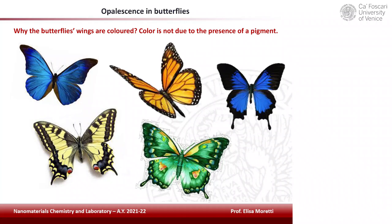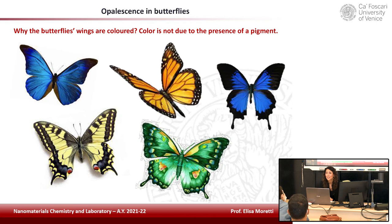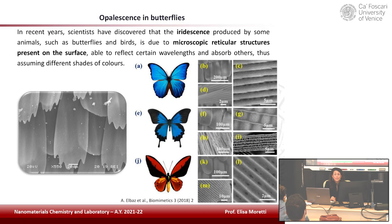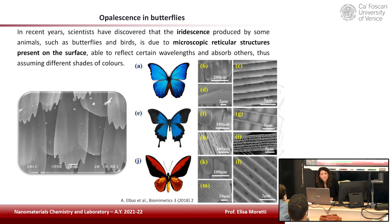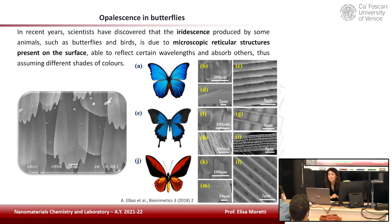The last example is butterflies. Why are butterfly wings colored? Color is not due to the presence of a pigment — it is a structural color. Scientists have discovered that the iridescence produced by some animals such as butterflies is due to a peculiar reticular structure present on the surface that interacts with light, reflecting certain wavelengths and absorbing others, thus assuming different shades of color. We are going to prepare in the lab direct and inverse opals, which are based on this phenomenon.